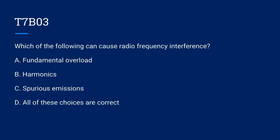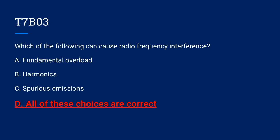T7B03. Which of the following can cause radio frequency interference? A. Fundamental overload. B. Harmonics. C. Spurious emissions. Or D. All of these choices are correct. The correct answer is D. All of these choices are correct.